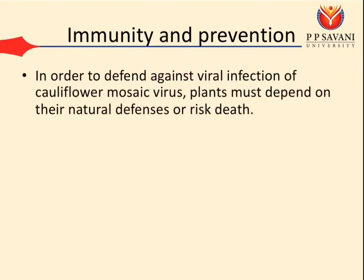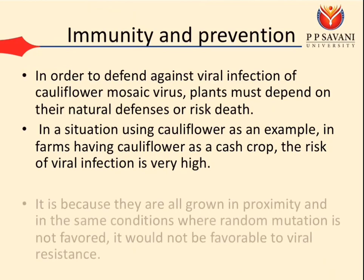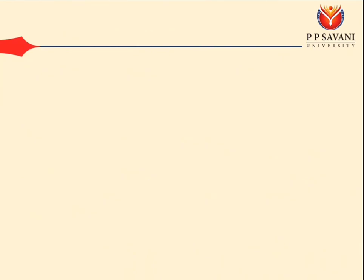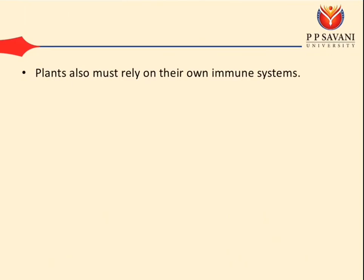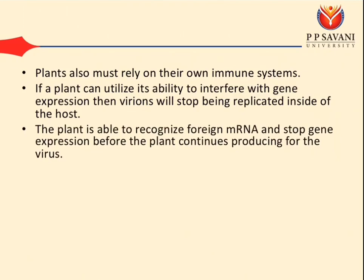Regarding immunity and prevention, in order to defend against viral infection of Cauliflower Mosaic Virus, plants must depend on their natural defenses. In farms growing cauliflower as a cash crop, the risk of viral infection is very high because plants are grown in proximity and in the same conditions, where random mutation would not favor viral resistance. Plants must rely on their own immune system; if a plant can interfere with gene expression, virions will stop being replicated. The plant is able to recognize foreign mRNA and halt gene expression before the plant continues producing for the virus.